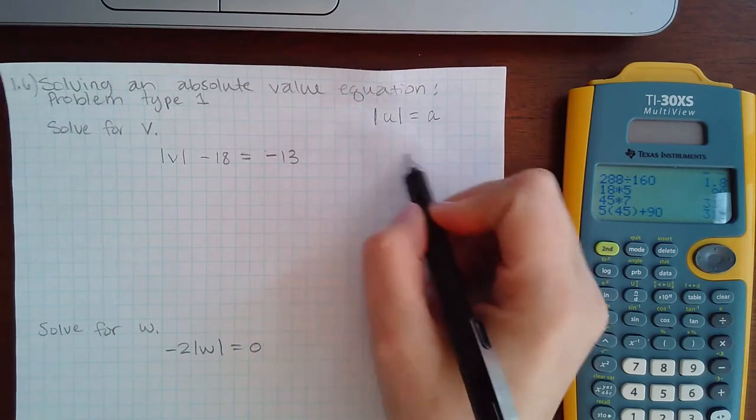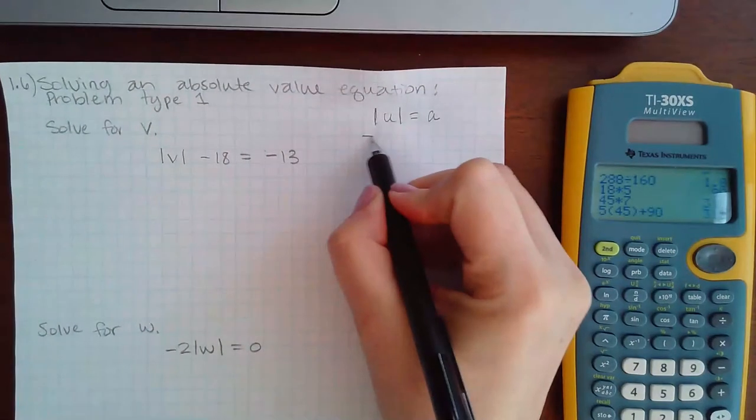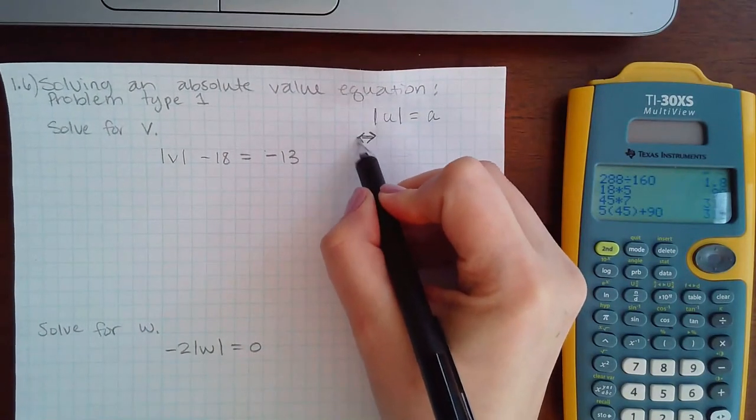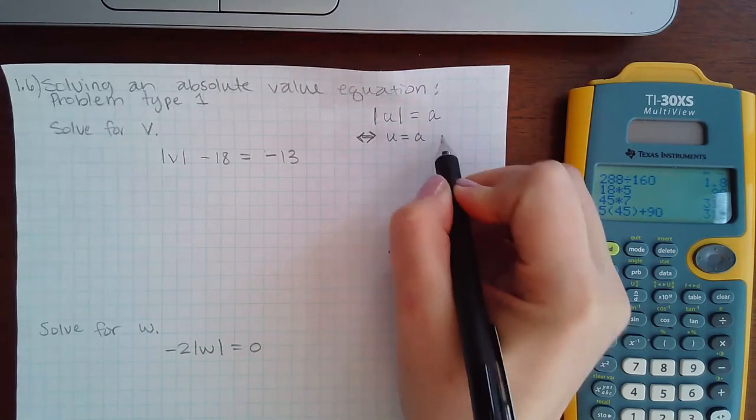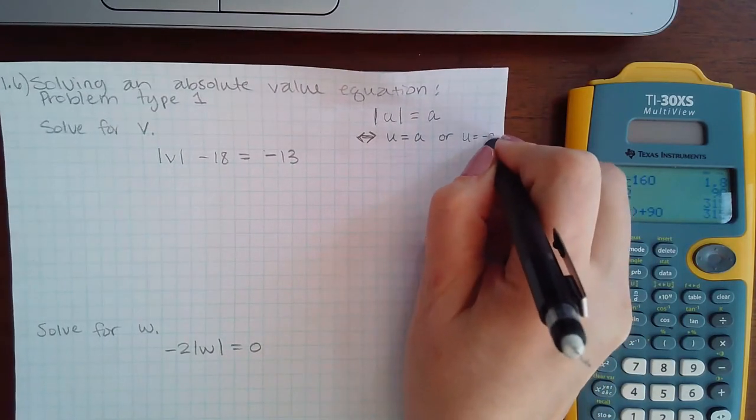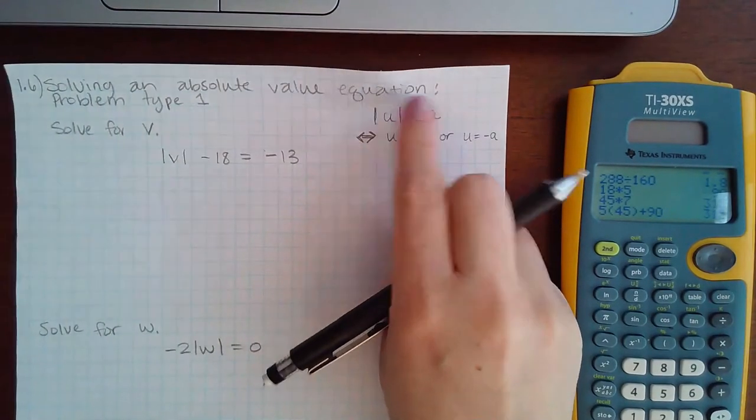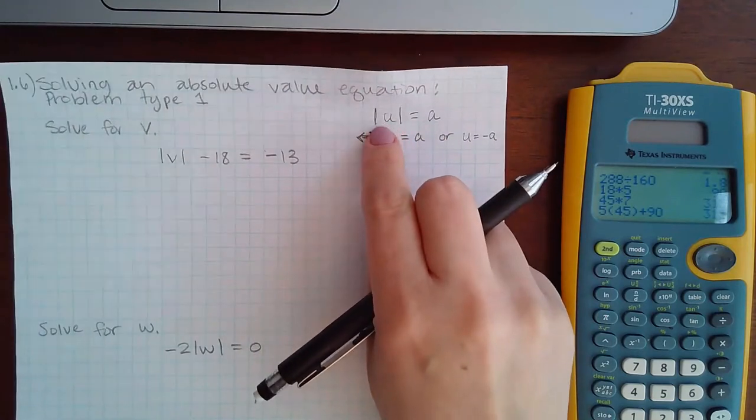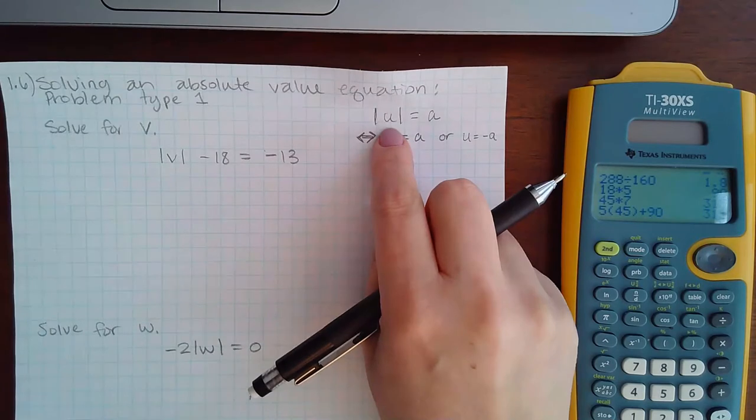...then this becomes two separate equations. It becomes u without the bars equal to a, or u equal to negative a, because in order for what is in here to turn out to equal this, that means that in here needed to be the positive value of this or the negative value of this.